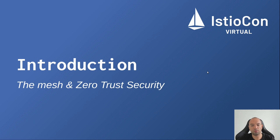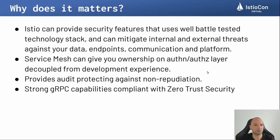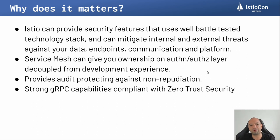Starting with the introduction — what is the mesh and how it relates with zero trust security? Istio can provide security features that use well battle-tested technology stacks. It can mitigate internal and external threats against your data, endpoints, communications, and the platform. The service mesh can give you ownership of the authentication and authorization layer, decoupling everything from the development side and giving you more flexibility for managing the entire ecosystem. Istio also provides audit protection against non-repudiation attacks, and has strong gRPC capabilities that are compliant with zero trust security.